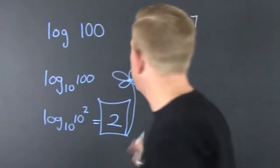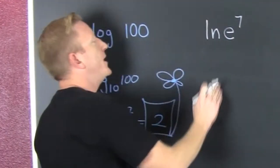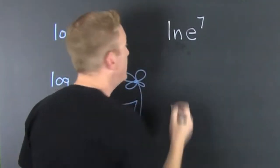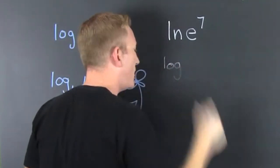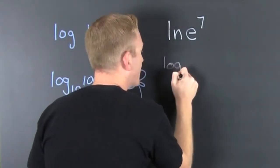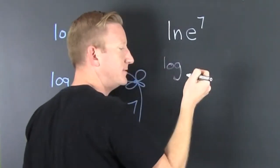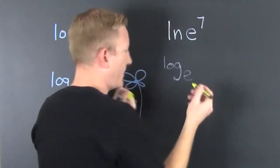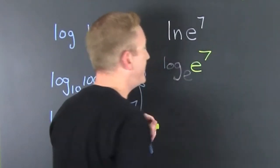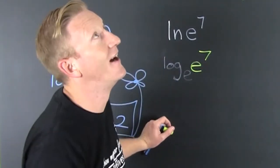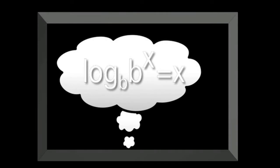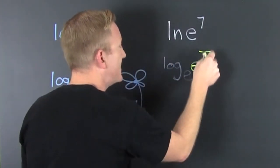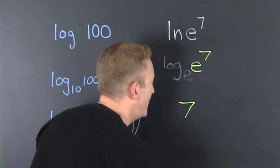Oh, so then we see this guy. If I rewrite that with its base, naturally this is the log base e of e to the seven. And again, I wonder what we're going to use? Log base b of b to the x is x. Ah yes, it's come to me: log base e of e to the seven is seven.